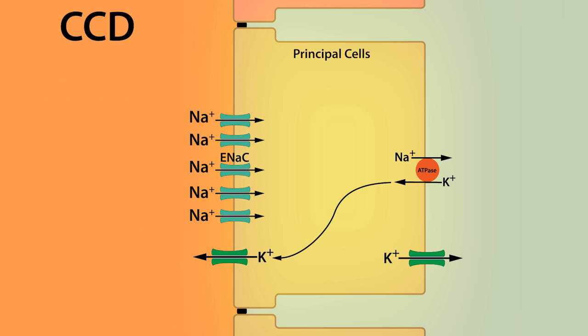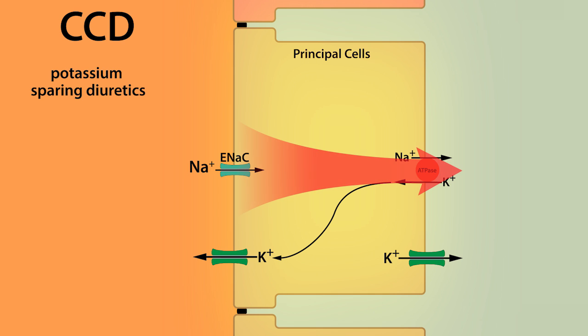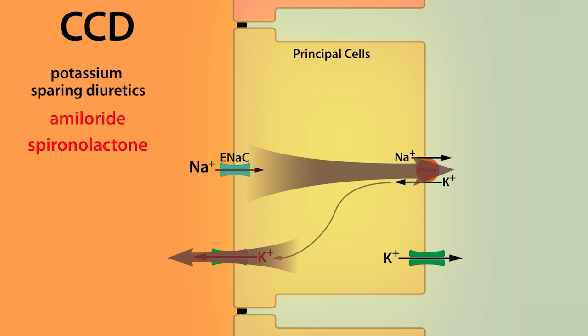Conversely, diuretics that specifically inhibit ENaC are referred to as potassium-sparing diuretics. Inhibition of ENaC not only decreases sodium reabsorption, it decreases the driving force for potassium secretion as well. Amiloride and spironolactone are two types of potassium-sparing diuretics. Amiloride blocks ENaC by occupying the channel pore, while spironolactone blocks the effects of aldosterone by blocking aldosterone from binding its nuclear receptor, which leads to a reduction in ENaC number and activity.